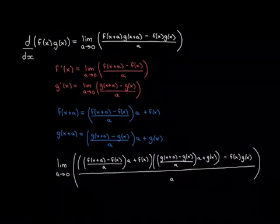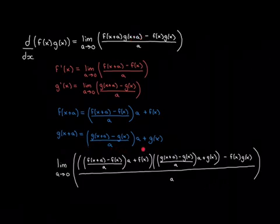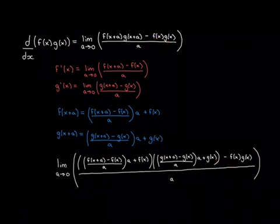If you substitute these expressions in, predictably you end up with an absolute mess. We've taken the rewritten f(x+a) and put it in place of f(x+a), then multiplied that by the rewritten g(x+a) in place of g(x+a). We've then subtracted f(x)·g(x) and the whole thing is still divided by a.